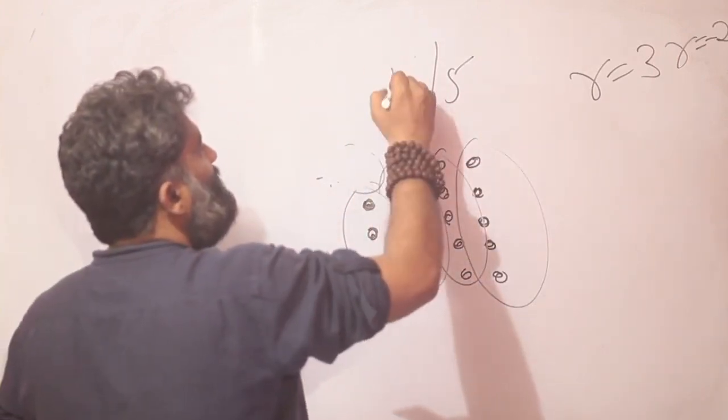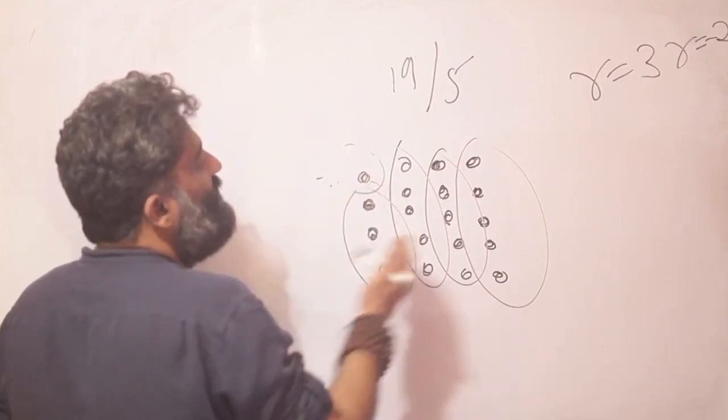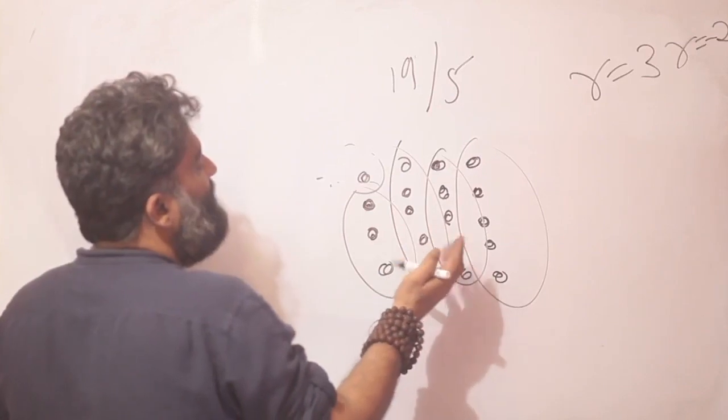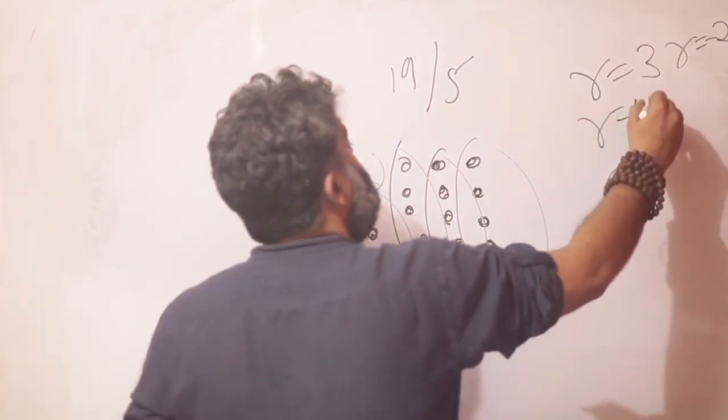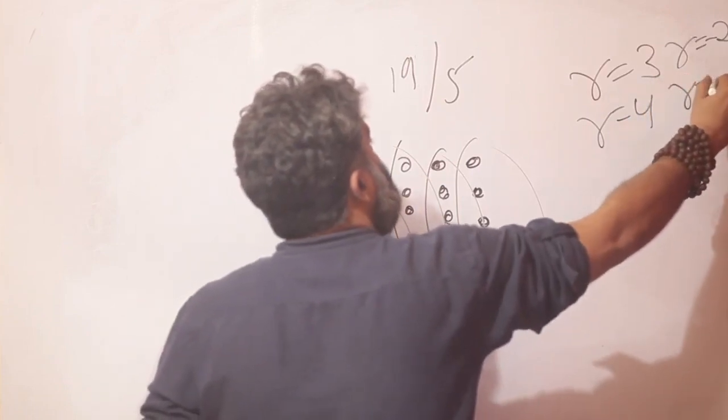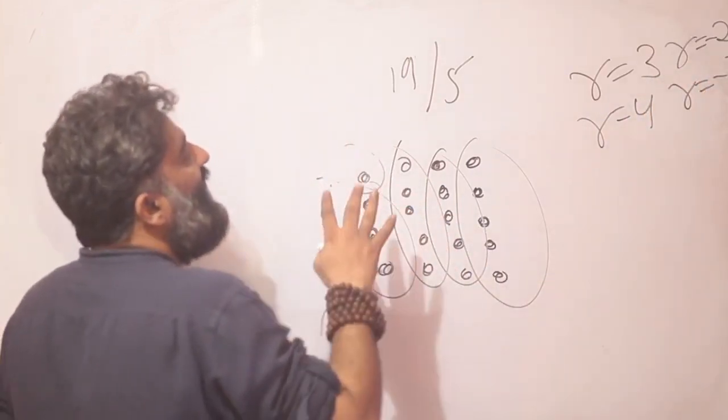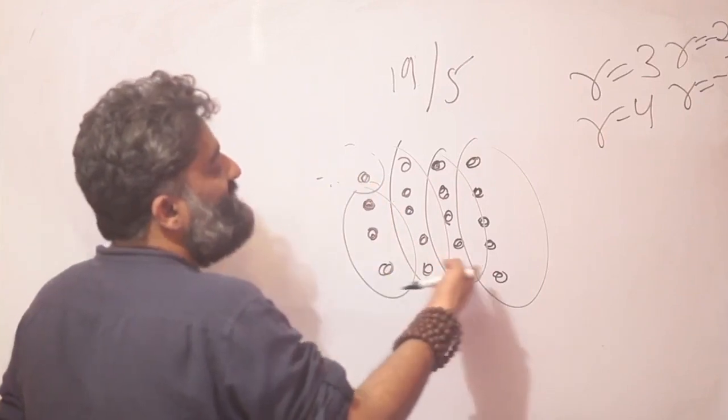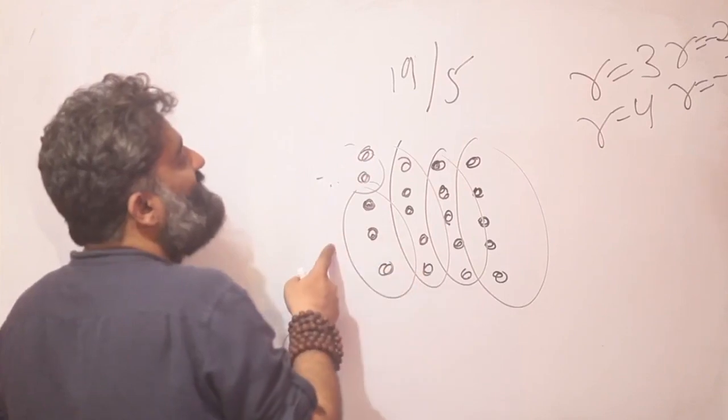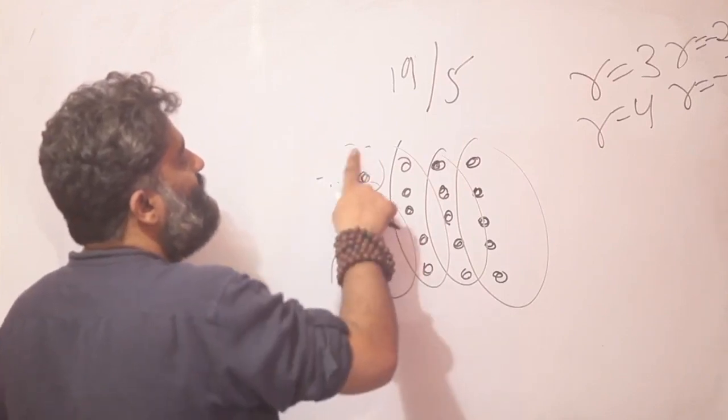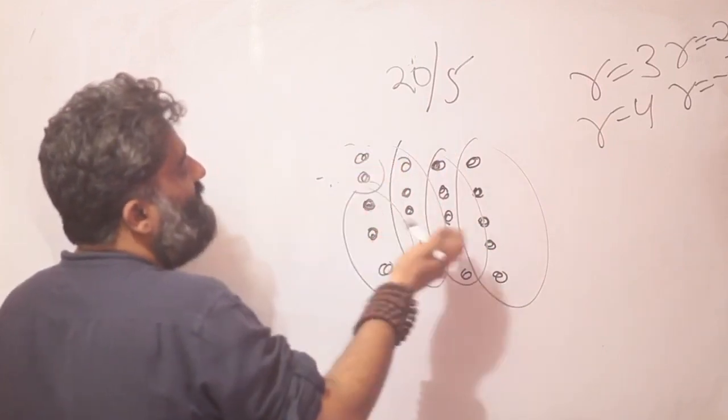Let us go for 19. That means one more toffee here. Once again one packet, two packet, three packet and you will be left with 4 toffees now. So your remainder would be 4, or you can say a remainder of minus 1. Remove these 4 toffees and you will have a multiple of 5 which is 15, or add that one extra toffee and you will reach 20 which is a multiple of 5.